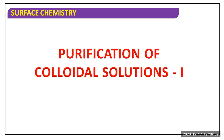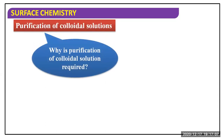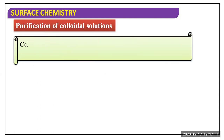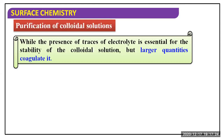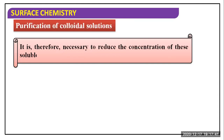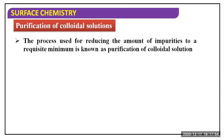Purification of colloid solutions — how we can purify them and why it is necessary. Colloid solution when prepared generally contains an excessive amount of electrolytes and some other soluble impurities. While the presence of traces of electrolyte is essential for the stability of the colloid solution, larger quantities cause it to coagulate. It is therefore necessary to reduce the concentration of these soluble impurities to a requisite minimum. The process used for doing so is known as purification of colloid solution.